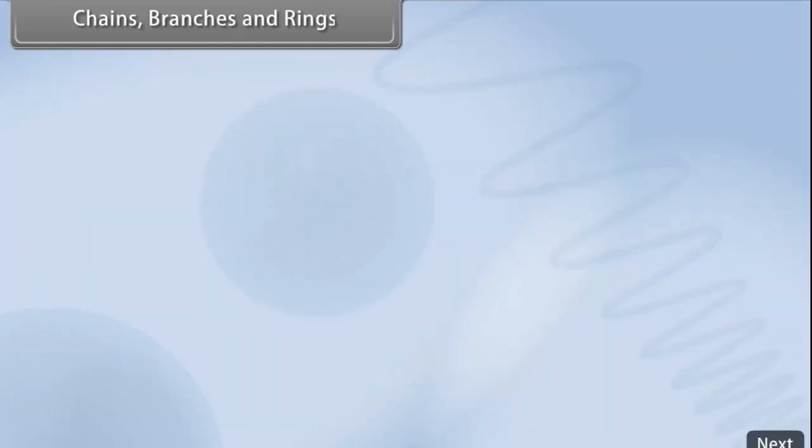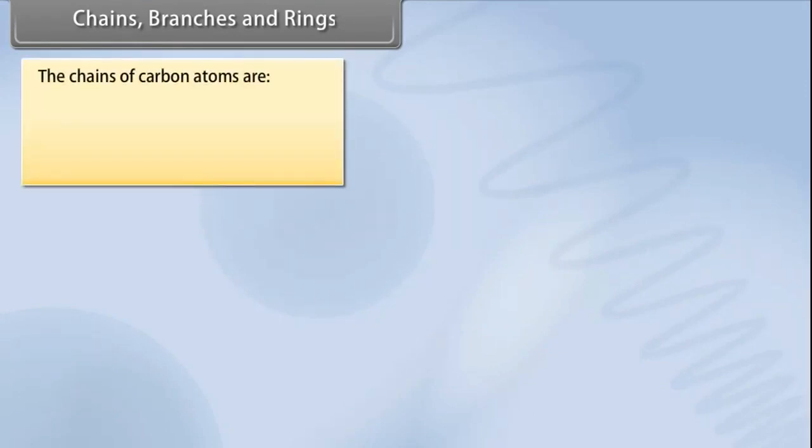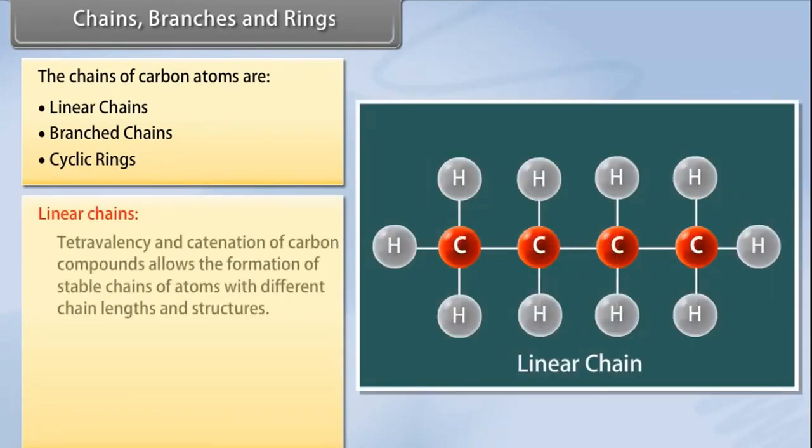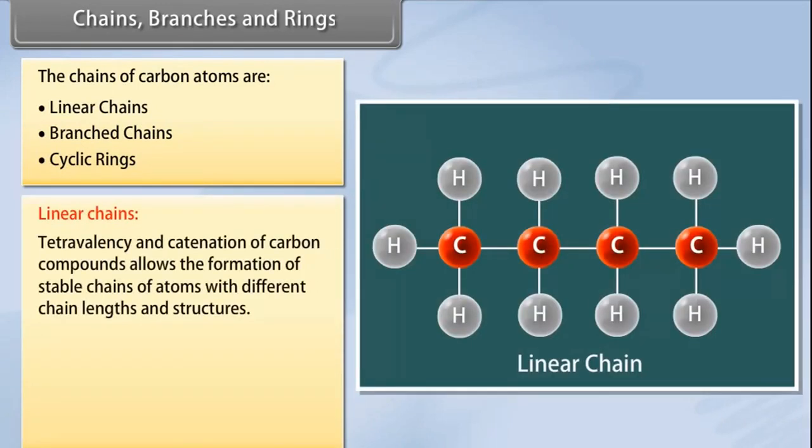Chains, branches, and rings. Many compounds contain carbon atoms that are linked with each other. The chains of carbon atoms are linear chains, branched chains, and cyclic rings. Linear chains: Tetravalency and catenation of carbon compounds allows the formation of stable chains of atoms with different chain lengths and structures.